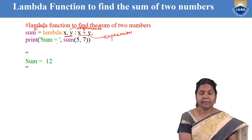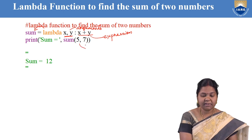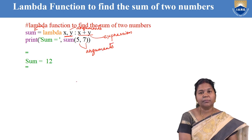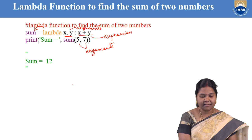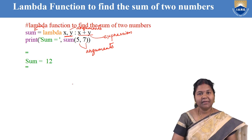We can print the sum by writing: sum equals sum of 5 comma 7. Here 5 and 7 are nothing but the arguments. After passing the arguments, it will compute the sum and return the result. This is the way we should write a lambda function.